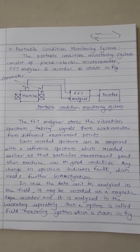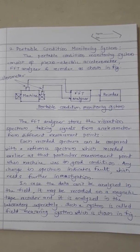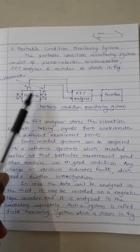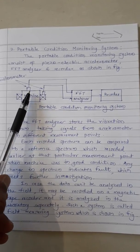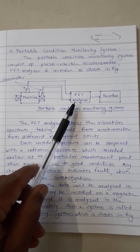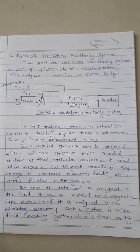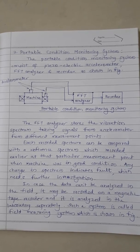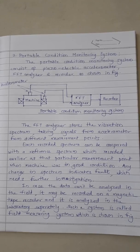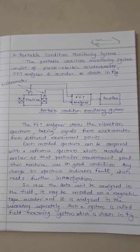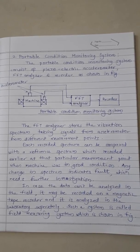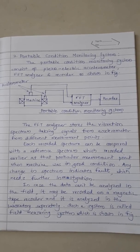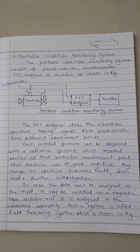The portable condition monitoring system consists of a piezoelectric accelerometer, FFT analyzer, and recorder. The FFT analyzer stores the vibration spectrum taking signals from the accelerometer from different measurement points. Each recorded spectrum can be compared with a reference spectrum recorded earlier at that particular measurement point when the machine was in good condition. Any change in spectrum indicates a fault which needs further investigation. In case the data cannot be analyzed in the field, it may be recorded on a magnetic tape recorder and analyzed in the laboratory separately.